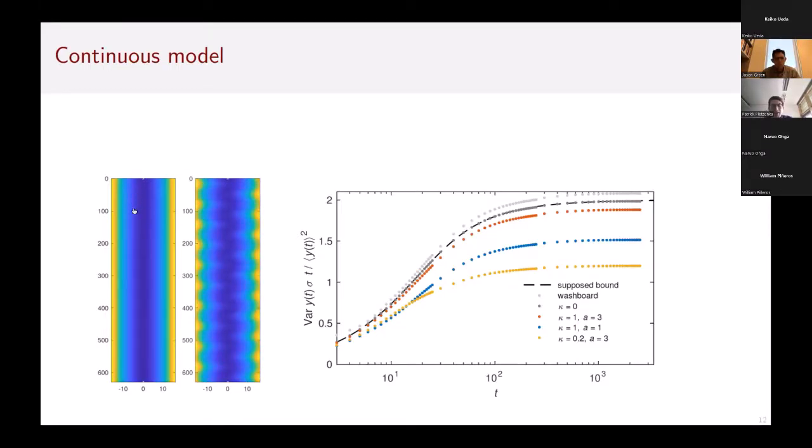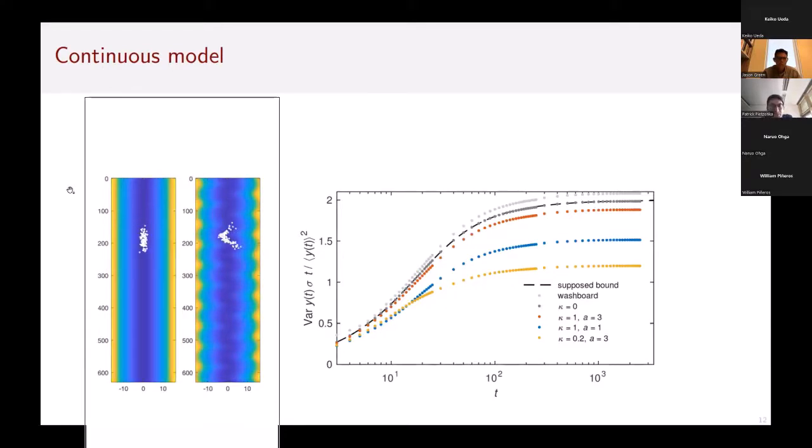If I run that continuous model using a package of non-interacting test particles, for comparison I show here on the left a free particle without any coupling potential, and on the right I show that coupling potential. If you start such a package, on the left you will see that the package spreads out much more, or at least a little bit more, than what you see on the right hand side.